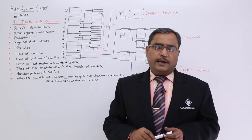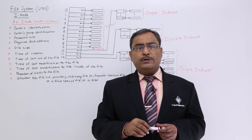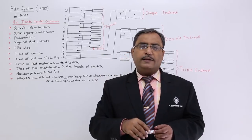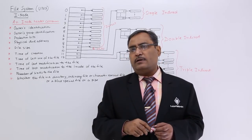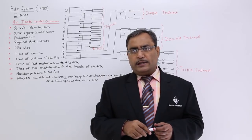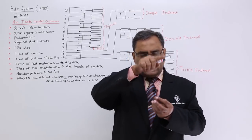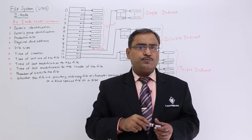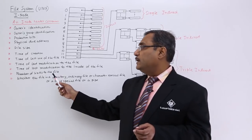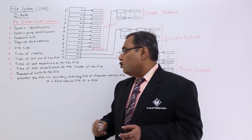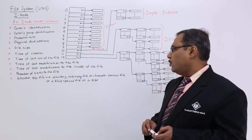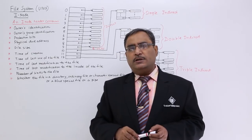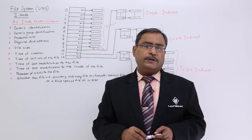The number of links to the file is also stored. In Unix operating system, a file can have different links from different paths — similar to shortcuts on a desktop — and the number of such links will be kept in the inode header. Additionally, the inode header indicates whether the file is a directory, ordinary file, character special file, block special file, or a pipe.